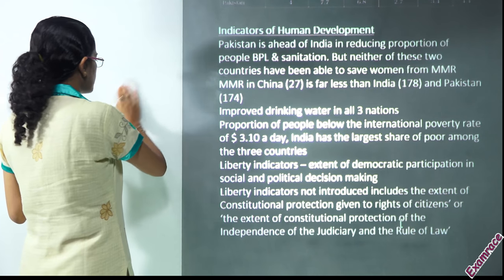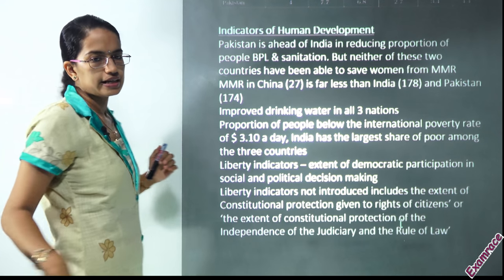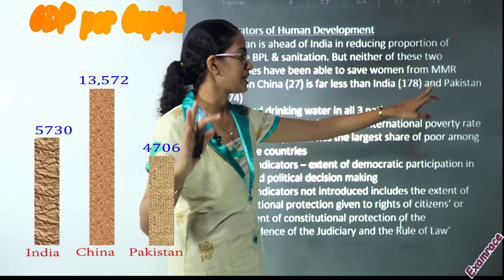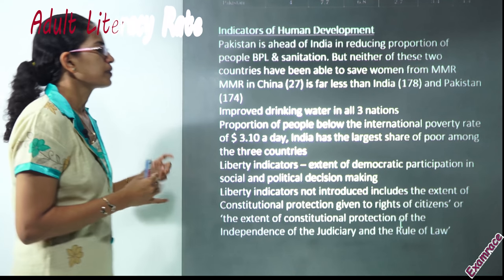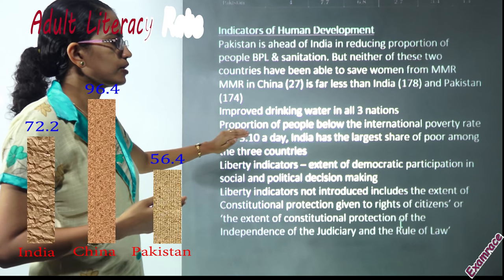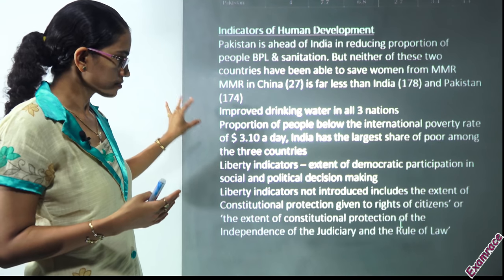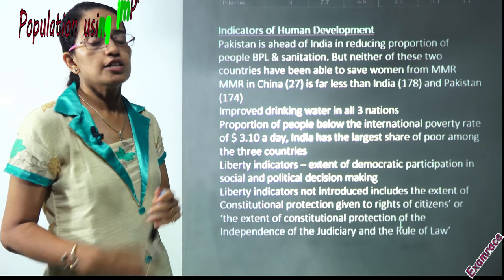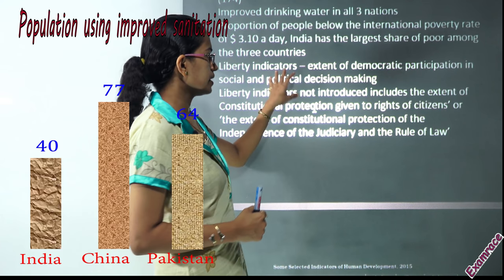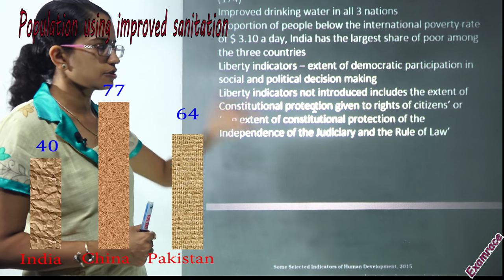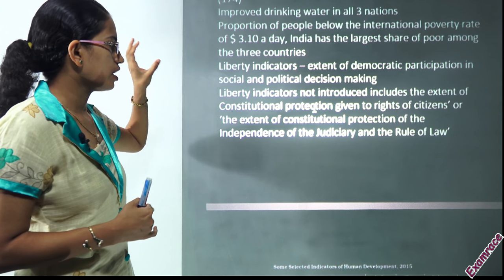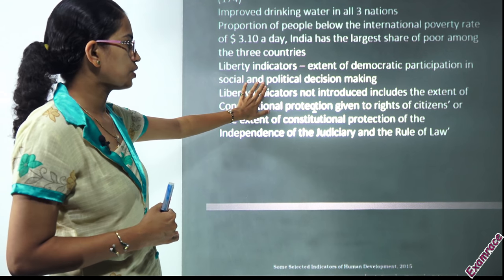Neither India nor Pakistan performed well on maternal mortality rate. China performed best with an MMR of 27, while in India and Pakistan it is above 150 — very high. All three nations have been working on safe drinking water. The proportion of people below the international poverty line is largest in India. Liberty indicators refer to democratic participation in social and political decision-making, though they do not include constitutional protections, judicial independence, or rule of law.